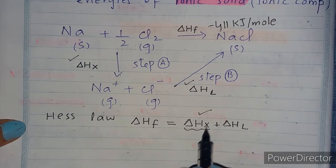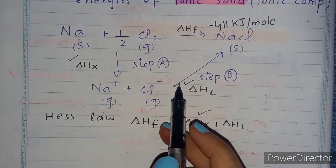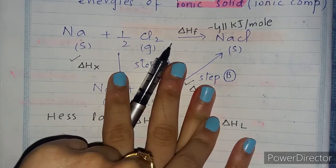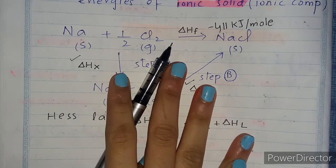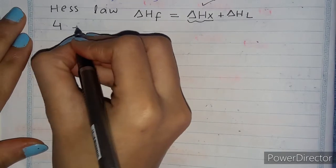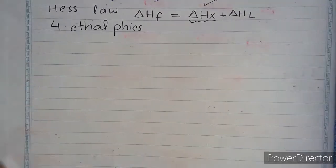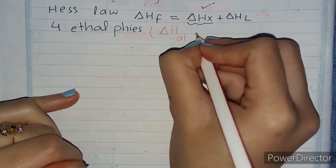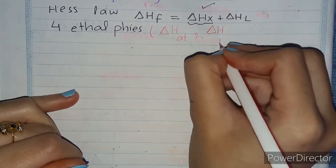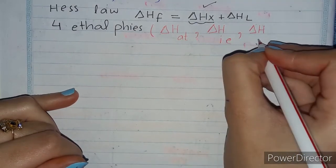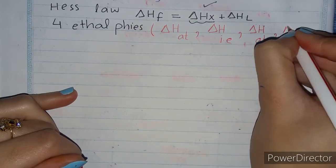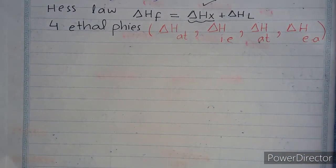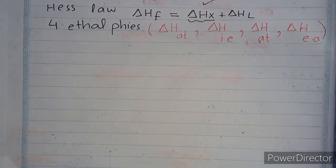In order to find ΔHX, we solve Step A. In Step A, four enthalpies are included: enthalpy of atomization of sodium (AT), enthalpy of ionization (IE), enthalpy of atomization of chloride, and enthalpy of electron affinity. These four enthalpies are included, and you have to remember the values by heart in the exam — they are not given for NaCl.